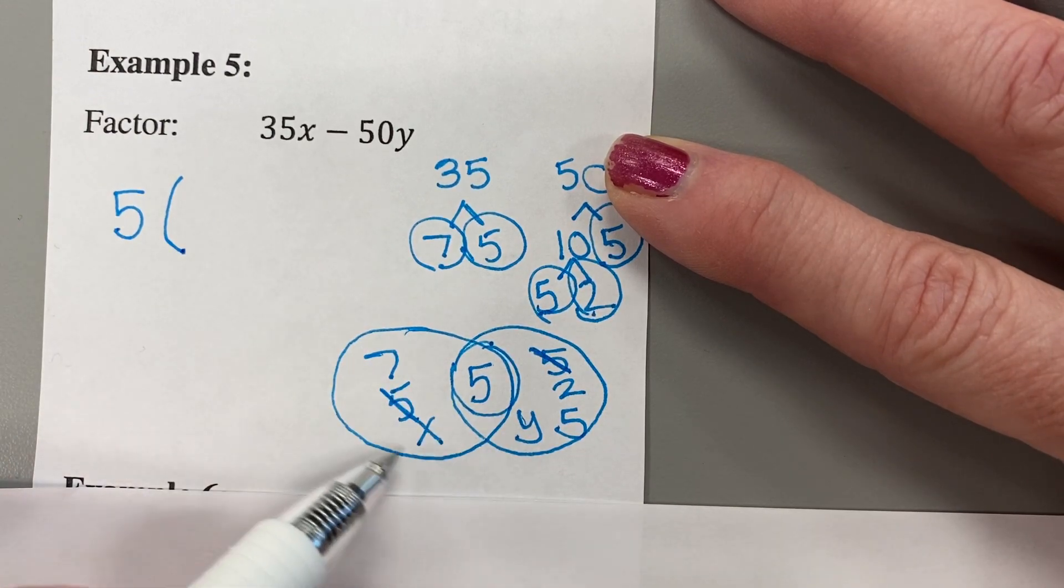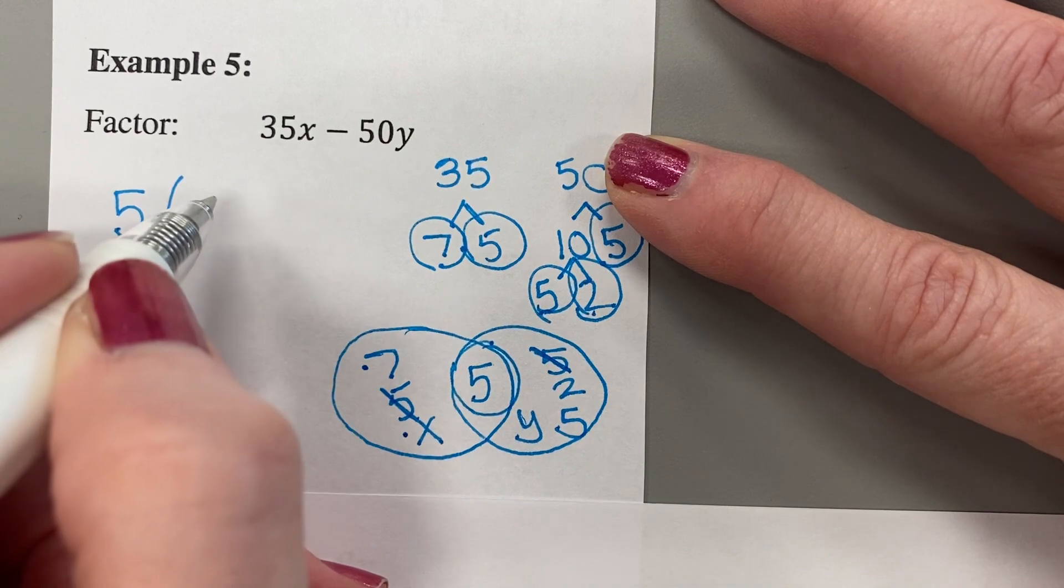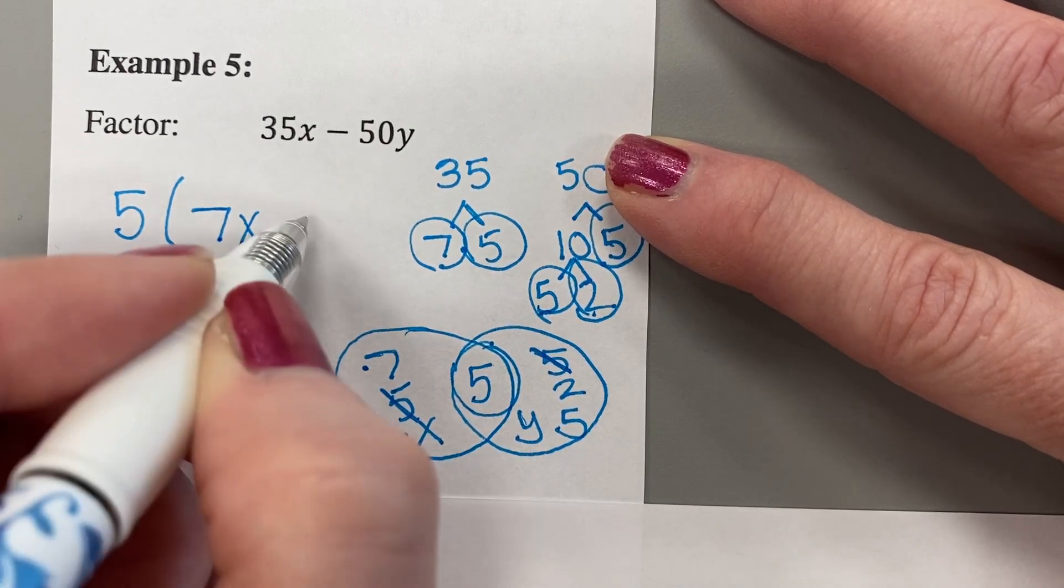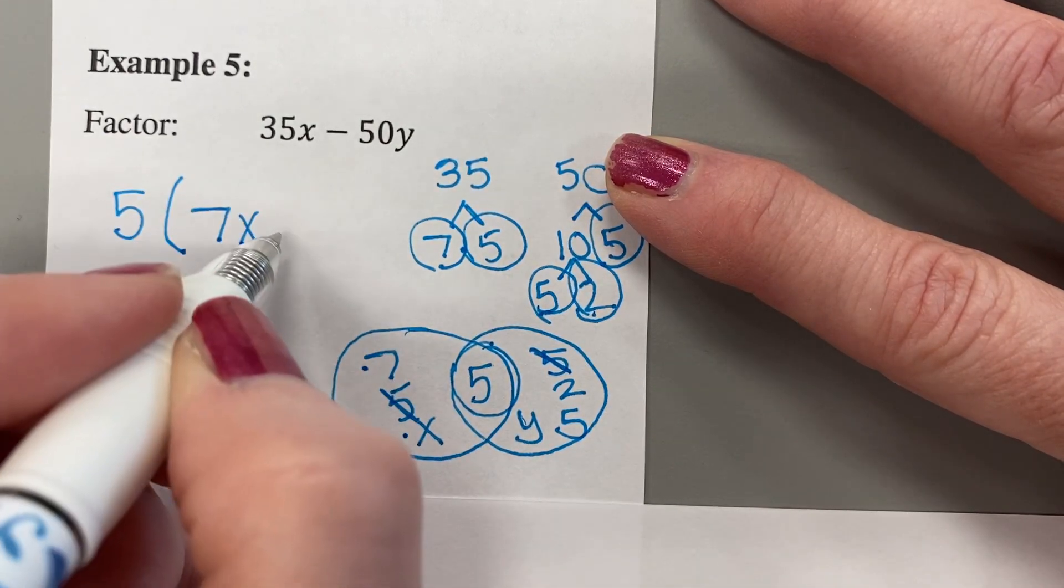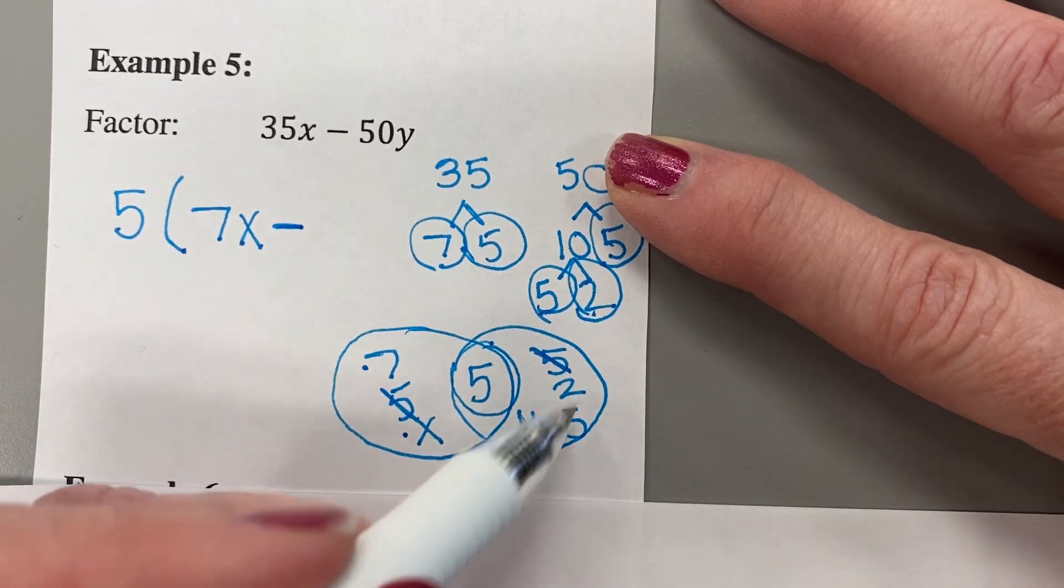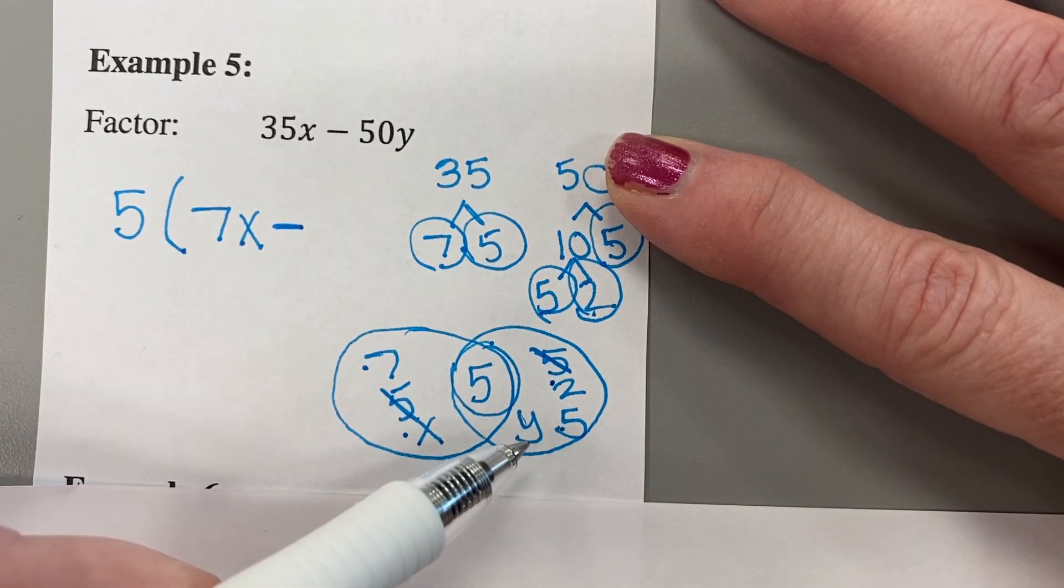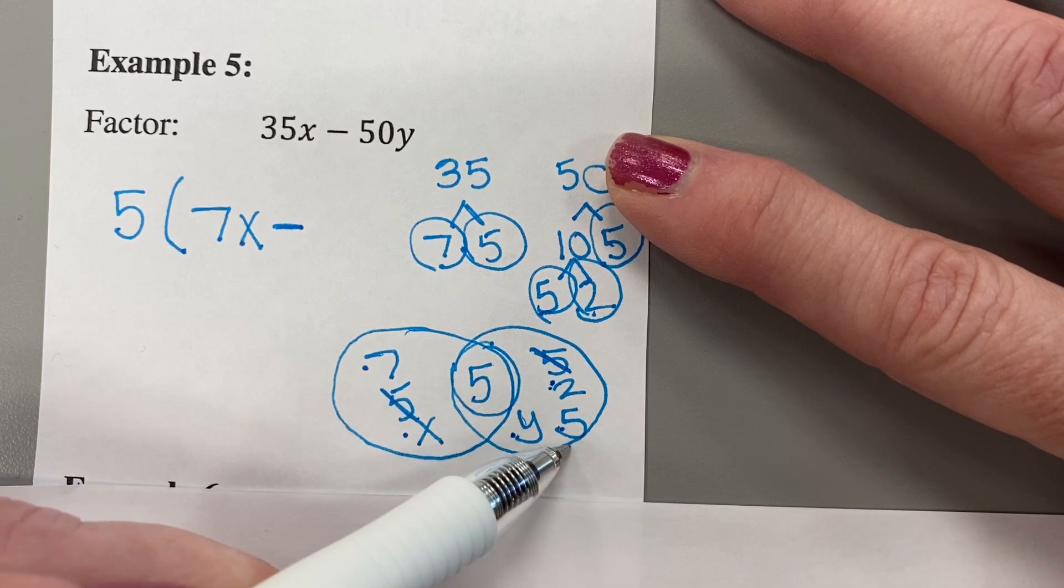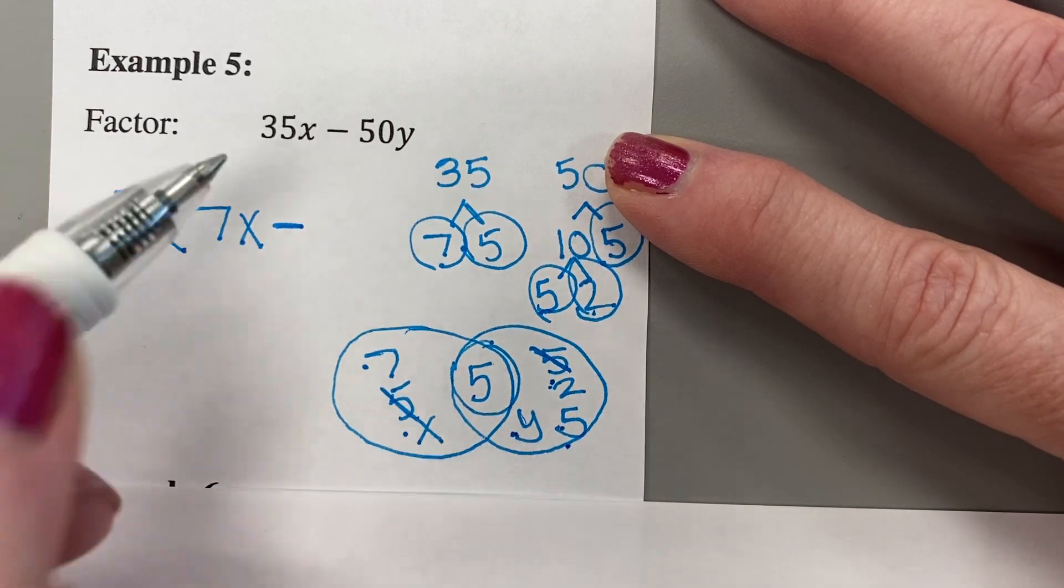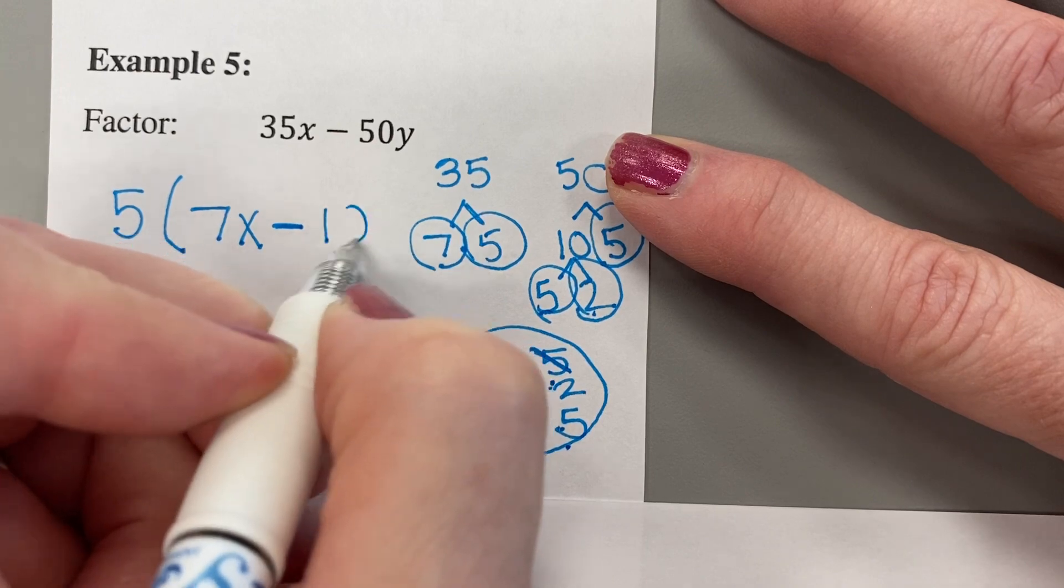Now what's left over here? Well, a 7 is left and an x. And we multiply those together. So 7x. Bring down this minus. And what's left on this half of the circle? Well, we have a 2 and a 5 and a y. So 2 times 5 is 10. 10 times y is 10y.